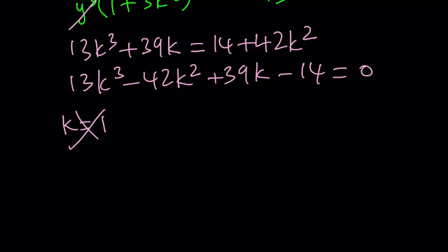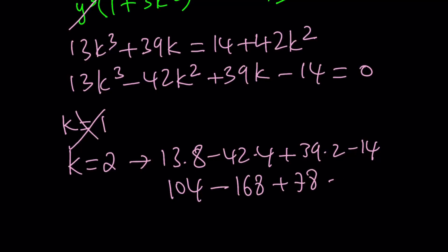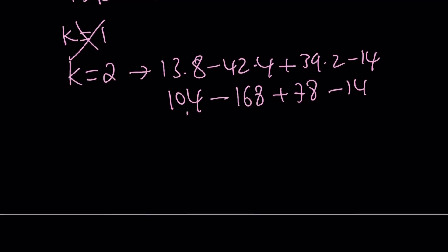Looking at possible solutions, I'm going to test k equals 2. So we're going to get 13 times 2 cubed, which is 8. 42 times 2 squared, which is 4. 39 times 2 minus 14. This is going to be 104. This is going to be 168. This is going to be 78 minus 14. Now let's go ahead and add the positives. That's going to give me 182. And let's go ahead and subtract these. 182 and bingo. We got an answer. Yay. K equals 2.